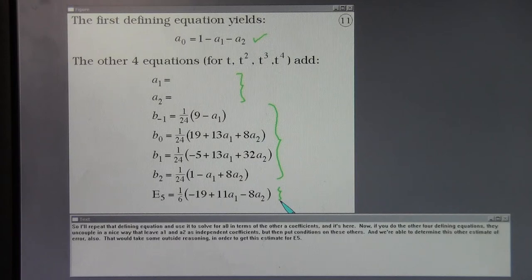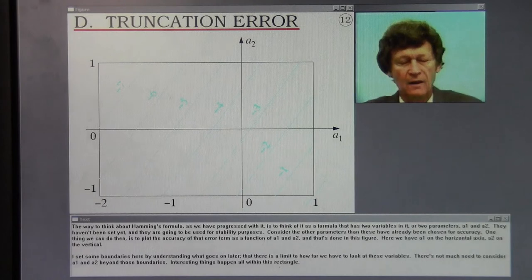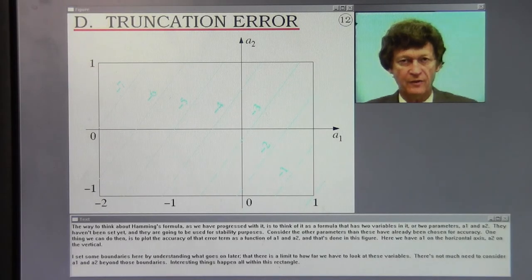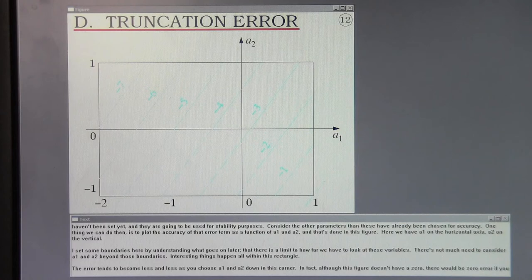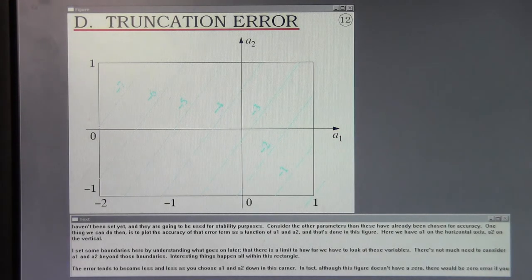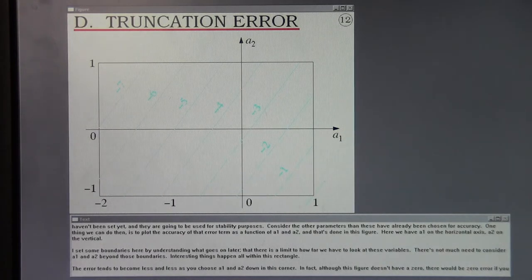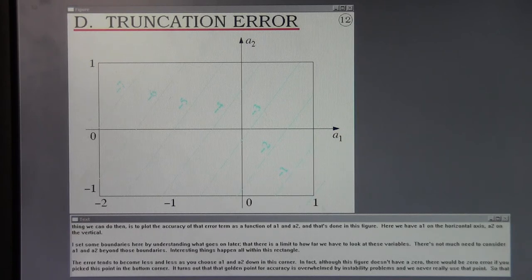The way to think about Hamming's formula as we've progressed with it is to think of it as a formula that has two variables in it or two parameters, A1 and A2. They haven't been set yet and they're going to be used for stability purposes. But consider that the other parameters the B's are already chosen for accuracy. One thing we can do then is to plot the accuracy or that error term as a function of A1 and A2. And that's done in this figure.